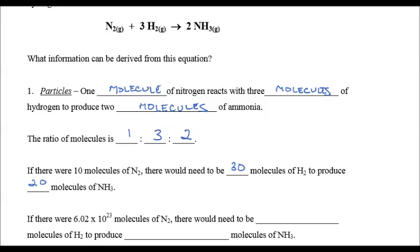If there were 6.02 times 10 to the 23rd molecules of N2, we just have to keep that ratio the same. There would be three times 6.02 times 10 to the 23rd molecules of H2, or 18.06. Either way is fine, and that would produce 2 times 6.02, or 12.04, times 10 to the 23rd molecules of ammonia. So it's a ratio thing. We just have to keep the ratio the same.